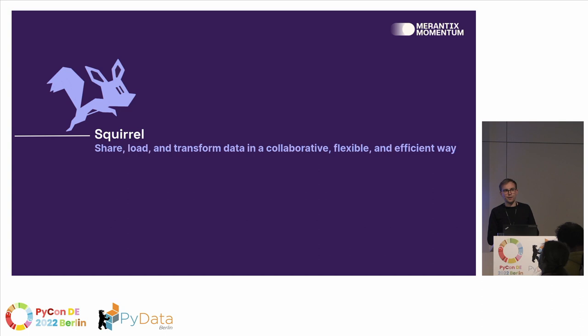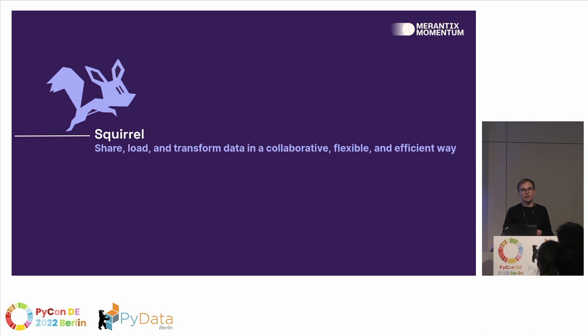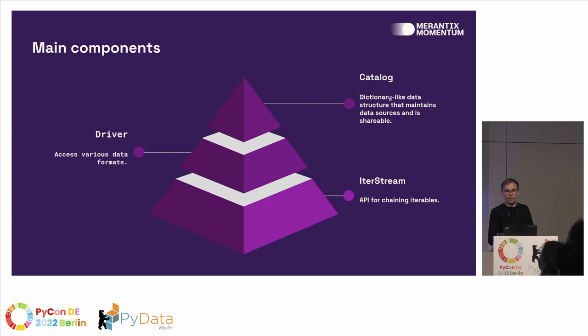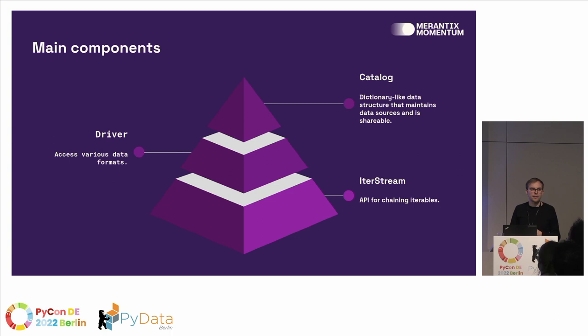We didn't find a solution — not a single one, and not even a combination of different frameworks that solved this for us. So we built it on our own. Here's Squirrel. It's now open source — a library to share, load, and transform data in a collaborative, flexible, and efficient way. Squirrel contains primarily three abstractions. The foundation is ITER streams — chainable iterators with a neat API.